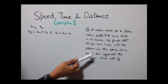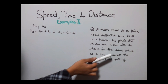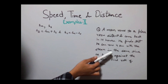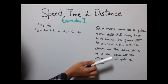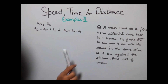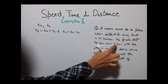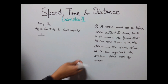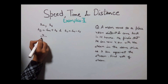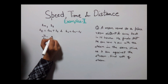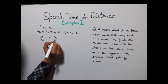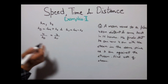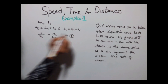Now it is given that he can row 4 km with the stream in the same time as 3 km against the stream. So the time equation is: 4 divided by speed of downstream equals 3 divided by speed of upstream. This is our first equation.